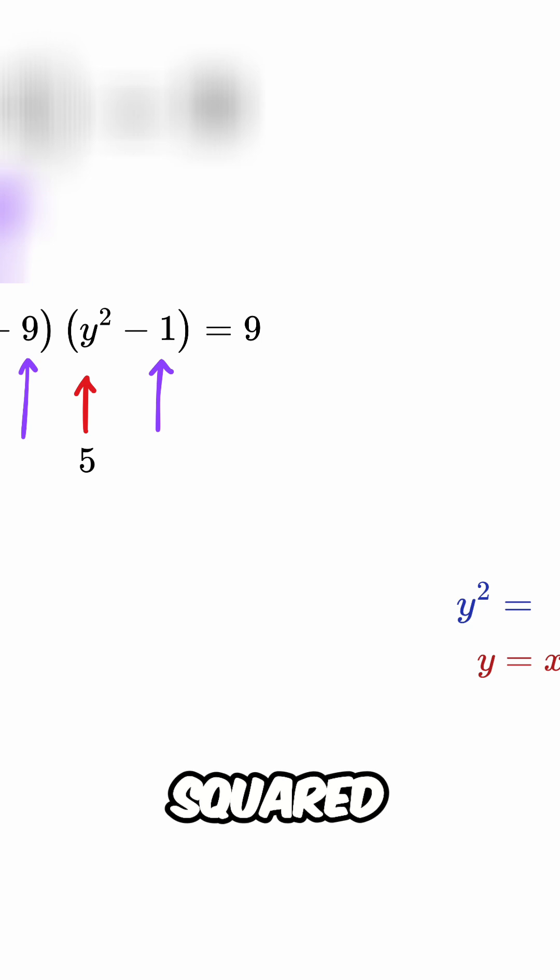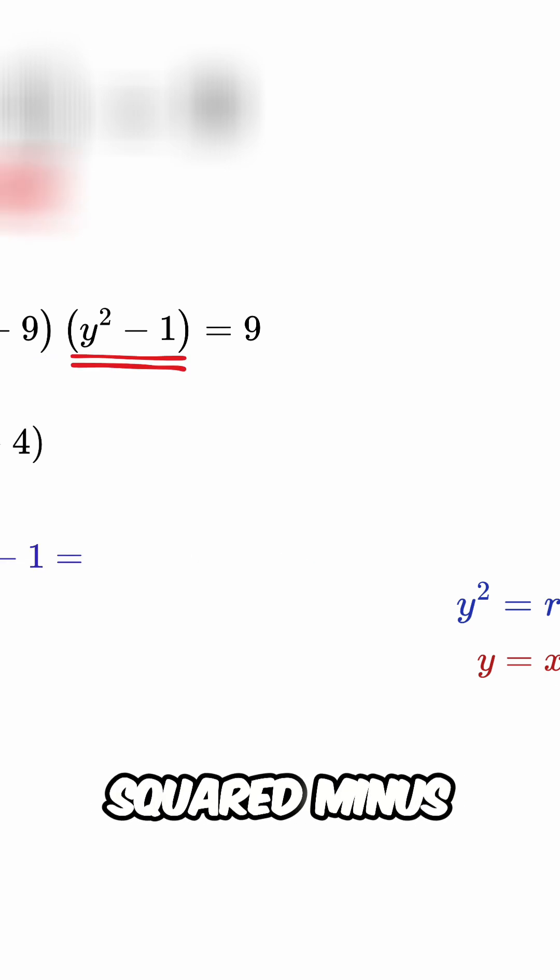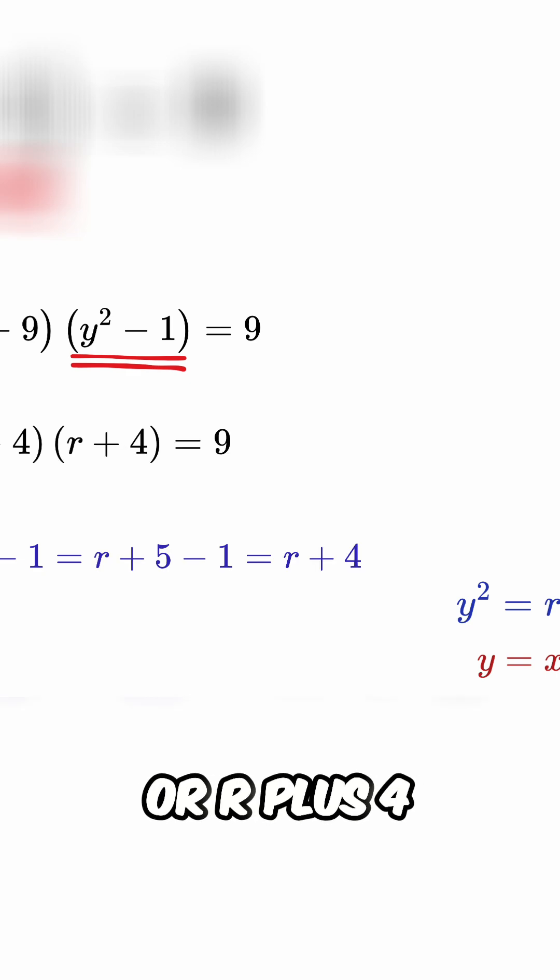So, let y squared equals r plus 5. Therefore, y squared minus 9 will be r plus 5 minus 9 or r minus 4 and y squared minus 1 equals r plus 5 minus 1 or r plus 4.